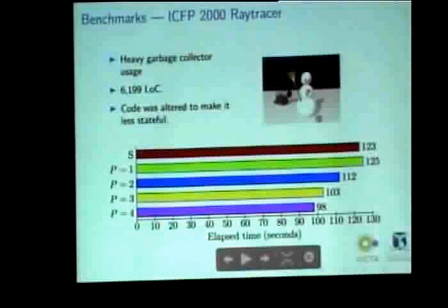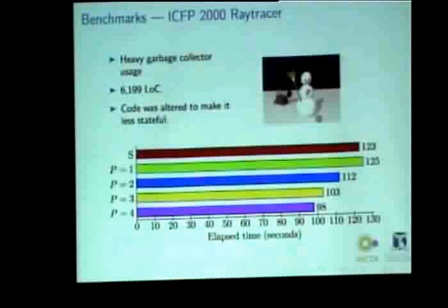So that means you're not changing the source code at all. Here's some benchmarks from an early implementation. This program existed before I tried to parallelize it. It's a ray tracer. And it uses quite a lot of garbage collection. And parallel garbage collection has been disabled for this benchmark, so that we measure only the benefit of parallel evaluation.